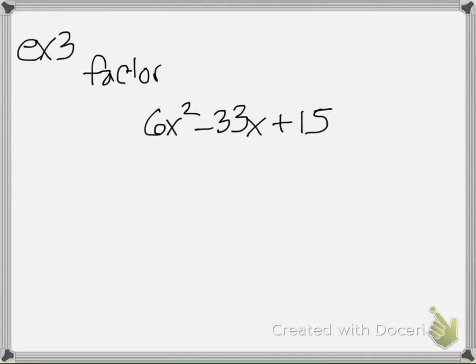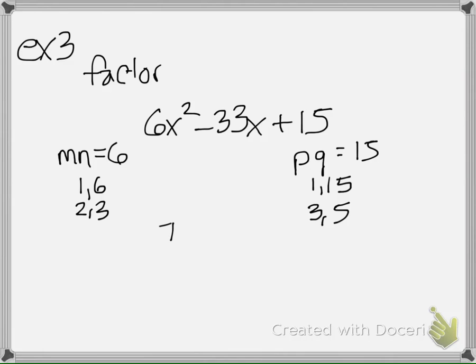So here's the solution. I know that mn is 6, I know that pq is 15. I can get to mn by multiplying 1 and 6 and 2 and 3. I can get to pq by multiplying 1 and 15 and 3 and 5, so I have a bunch of different trials I'm going to try out here.